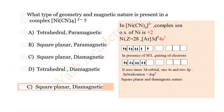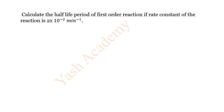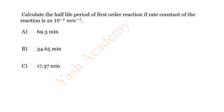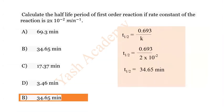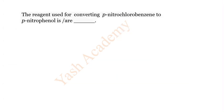Question 9: Calculate the half-life period of a first-order reaction if the rate constant is 2 × 10⁻² per minute. Options: A) 69.3 min, B) 34.65 min, C) 17.37 min, D) 3.46 min. The correct answer is B) 34.65 minutes.